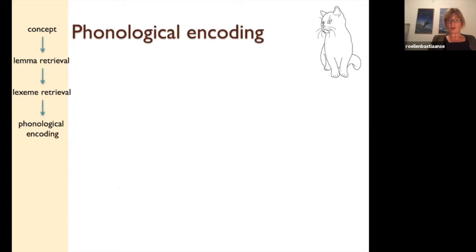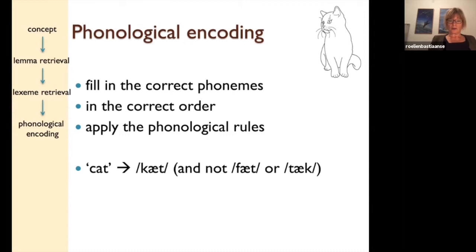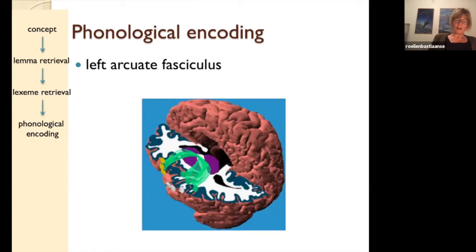Once the lexemes have been found, the phonemes have to be filled in in the correct order and you have to apply the phonological rules. So the lexeme 'cat' becomes 'cat' and not 'fat' or 'tack.' For this — and this is a very old picture but it's clear — we use the left arcuate fasciculus. We now know, because of the work of Catani, that it's much more complicated. But basically, it is the connection between Wernicke's area and Broca's area. It's a subcortical tract.